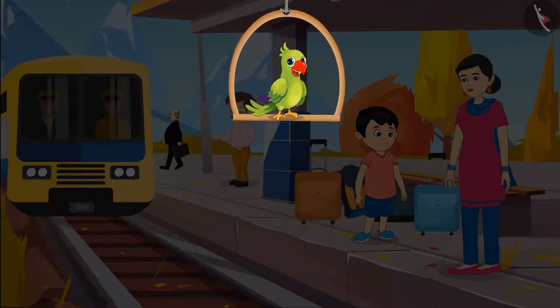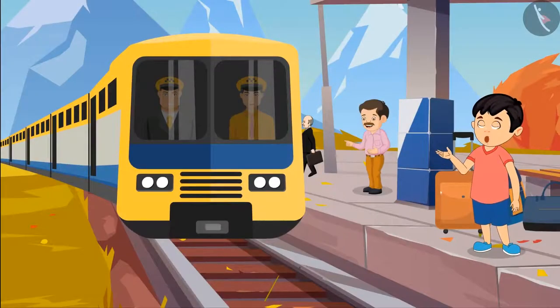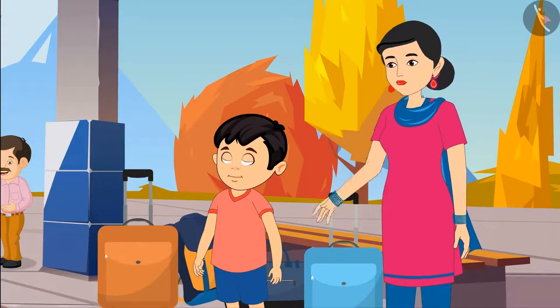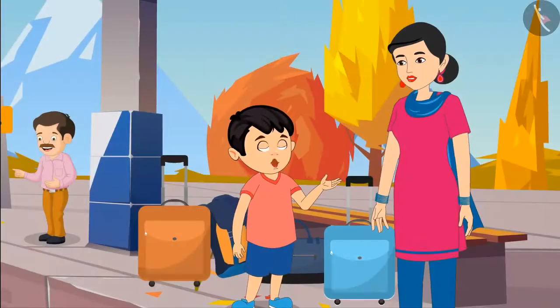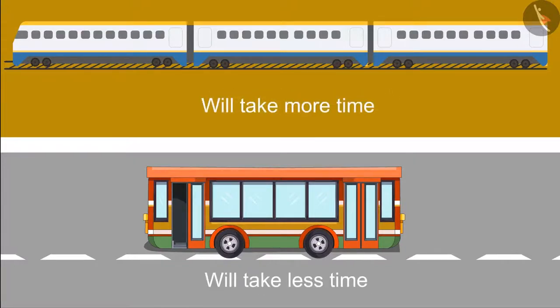Chotu is going with his mother to his grandparents' house by train today. Chotu has come to the railway station for the first time. Mom, this train is so long. Yes, Chotu. There are lots of coaches in the train. Mother, this train is longer than the bus. It means that it will take us longer to reach my grandparents' house.